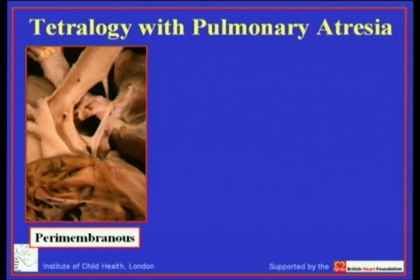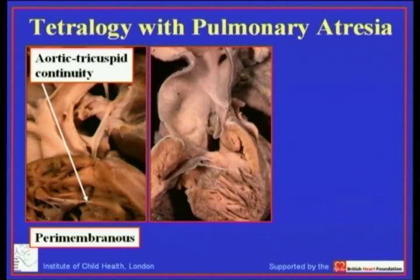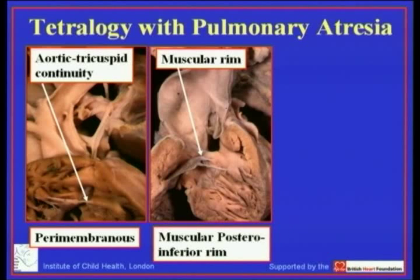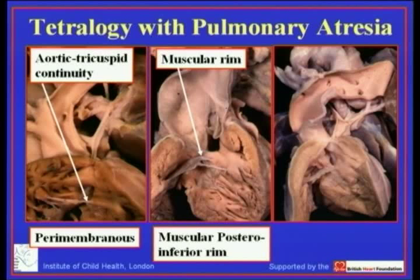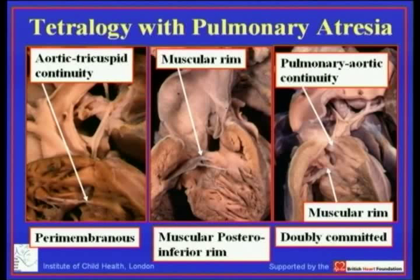Here is a typical example of tetralogy with pulmonary atresia. At the postural inferior margin, there is fibrous continuity between the aortic and tricuspid valves, giving a perimembranous defect. In a subset — perhaps a third to a fifth — a muscular postural inferior rim interposes between the leaflets of the tricuspid and overriding aortic valves. In a small subset, the defect extends all the way to an imperforate pulmonary valve, in this case associated with a muscular postural inferior rim. In each instance, the intracardiac anatomy is that of tetralogy with pulmonary atresia rather than stenosis.